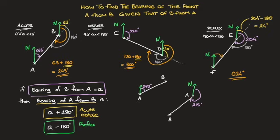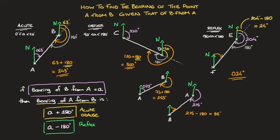Here are two more quick examples. In the first, the bearing of B from A is 73 degrees — an acute angle — so we use the first formula: bearing of A from B is 73 + 180 = 253 degrees. In the second, the bearing of B from A is 215 degrees — a reflex angle — so we use the second formula: bearing of A from B is 215 minus 180 = 35 degrees, written with three digits as 035.